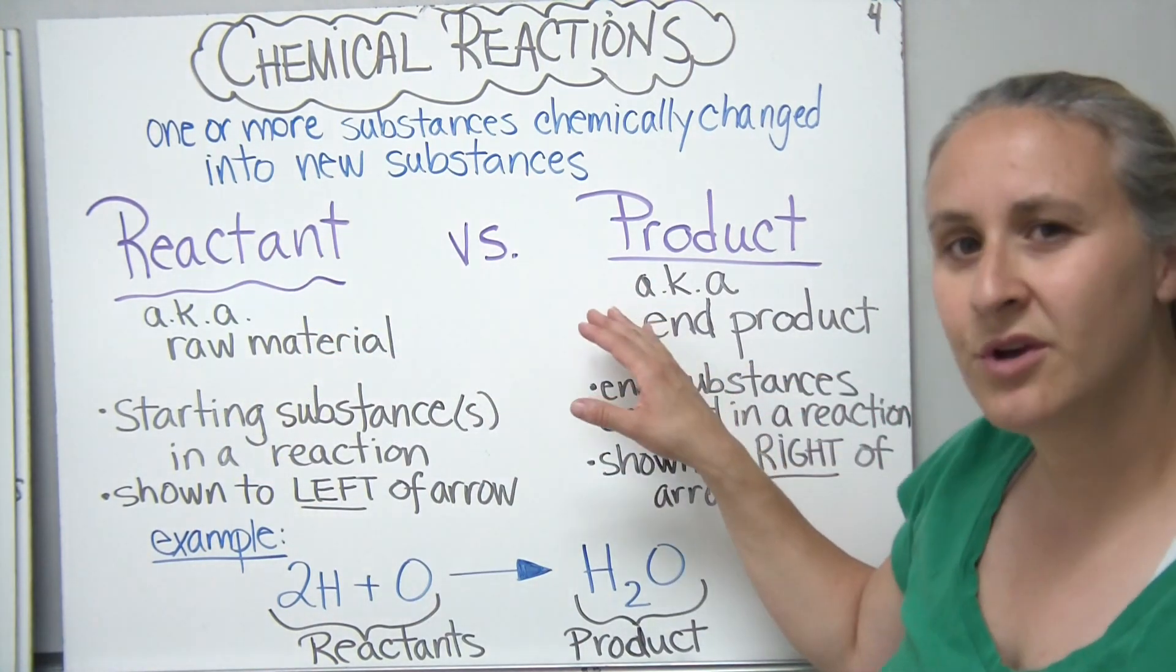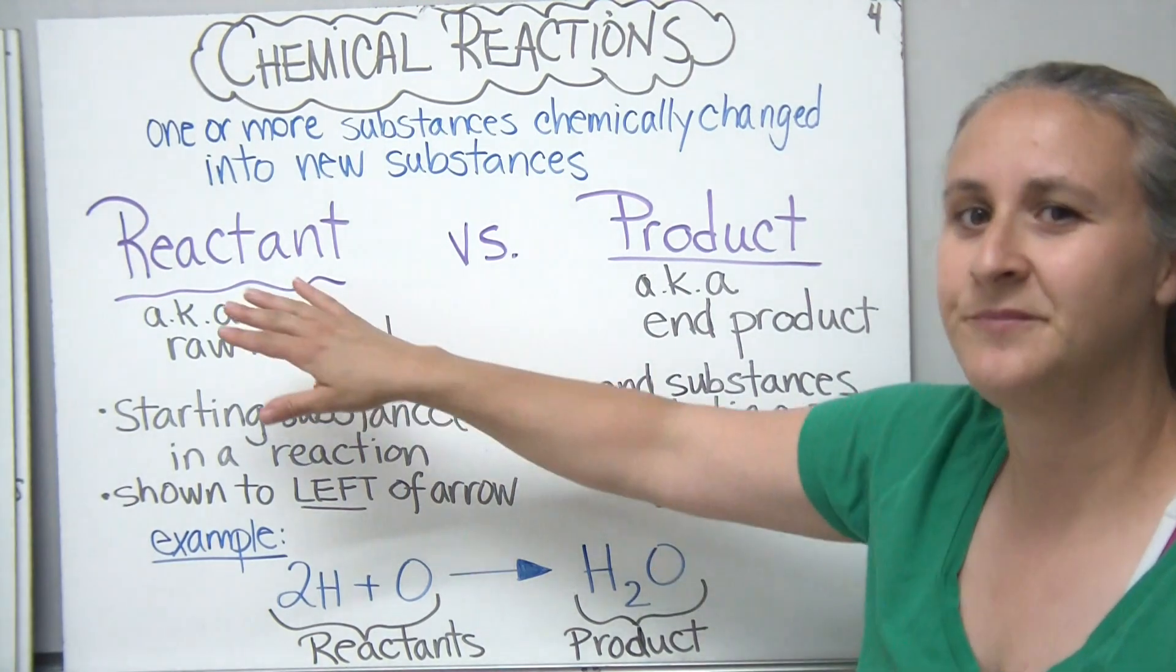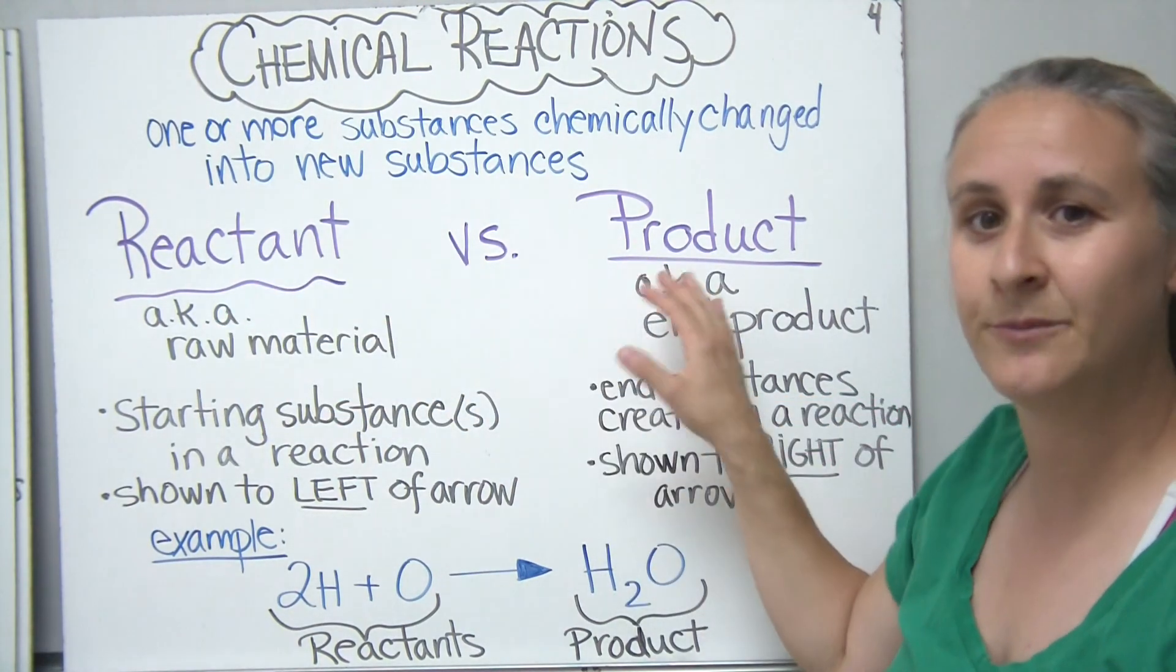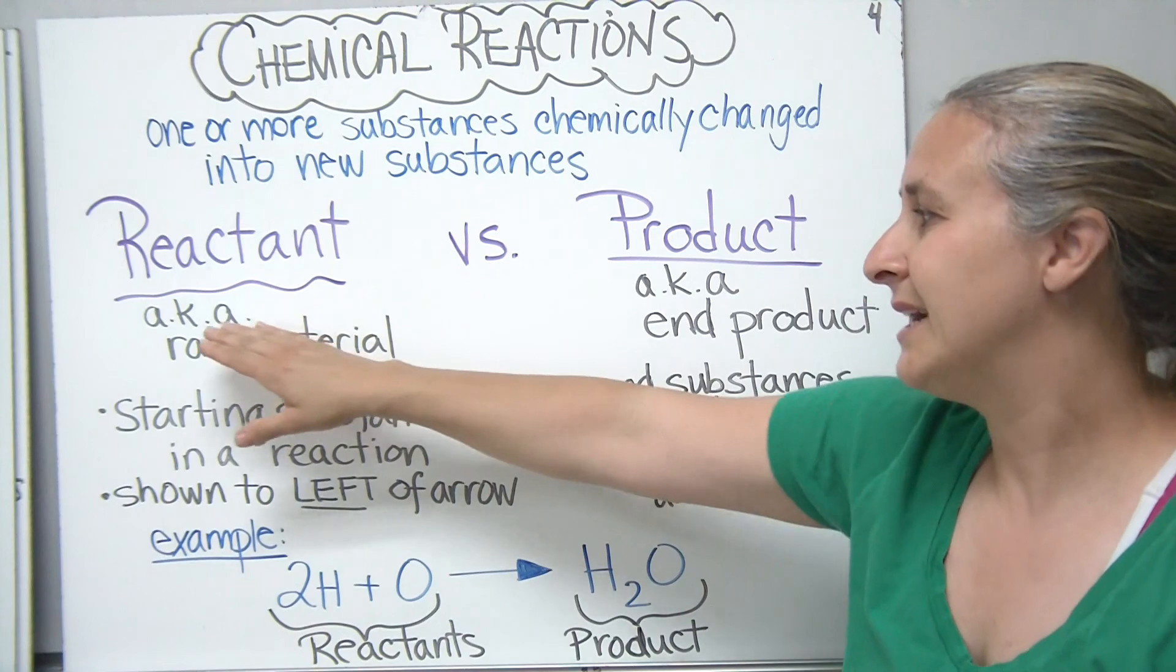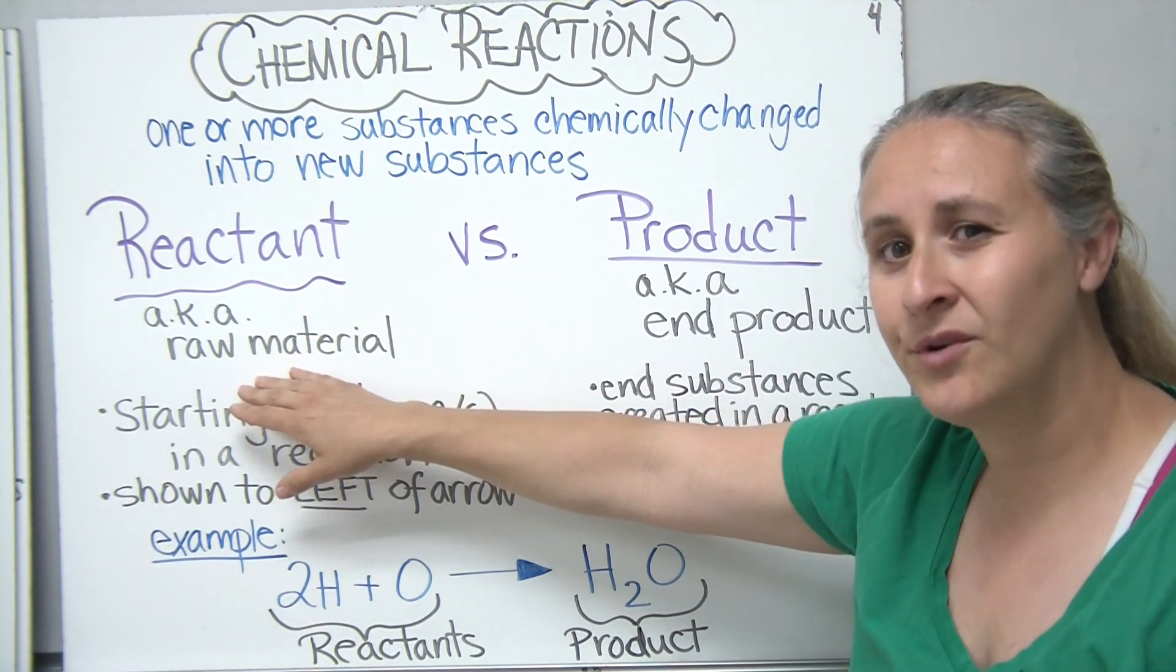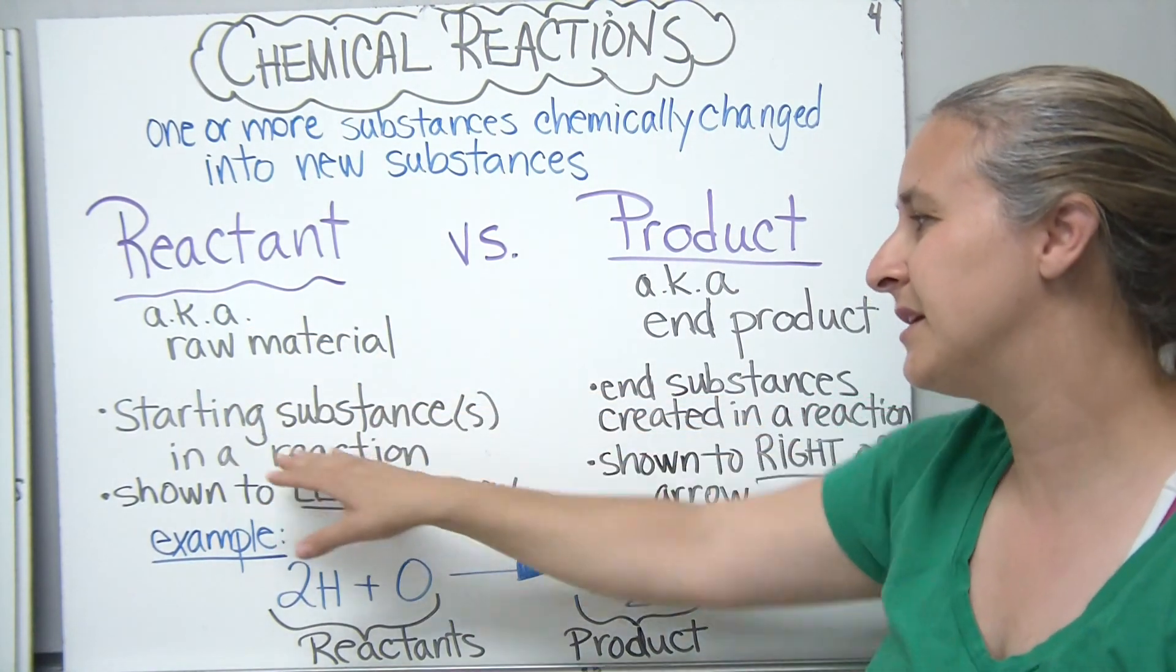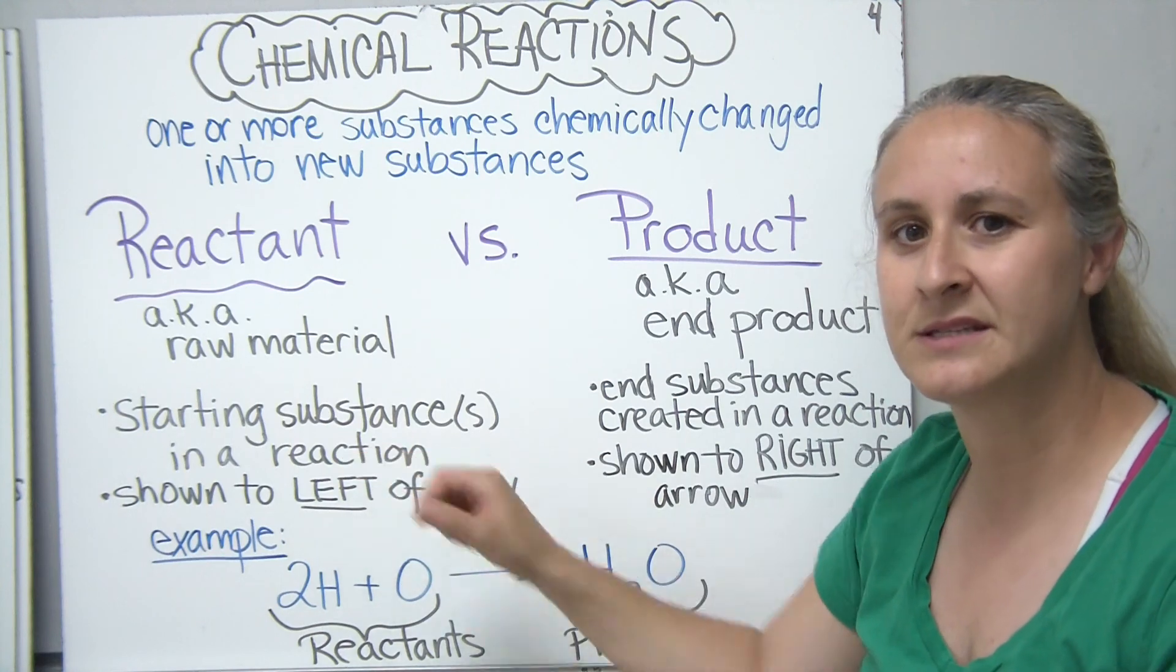In terms of chemical reactions, we talk about two parts of the reaction. We have the reactants, and then we have the products. The reactants, many times, you'll see them called raw materials.